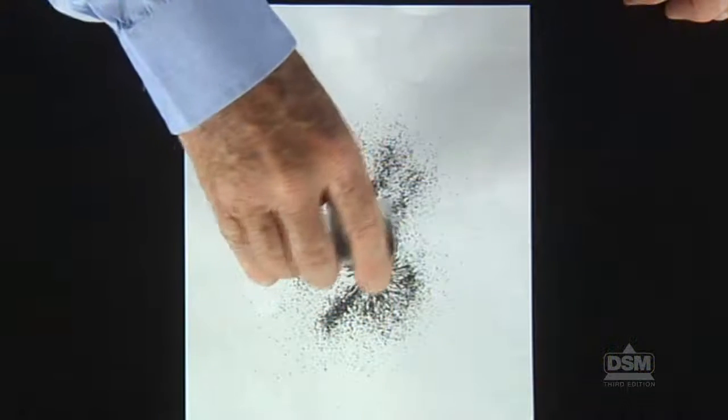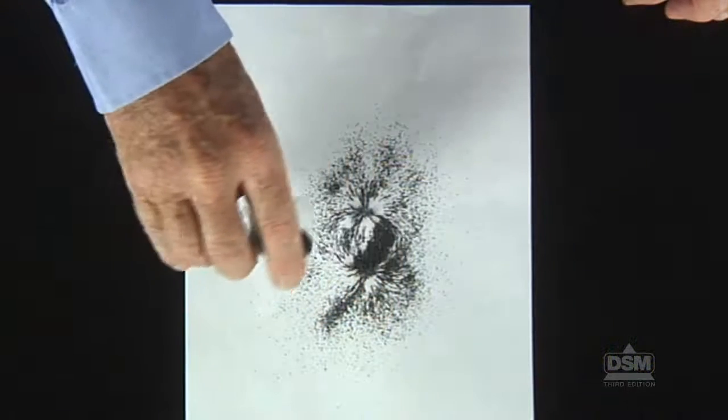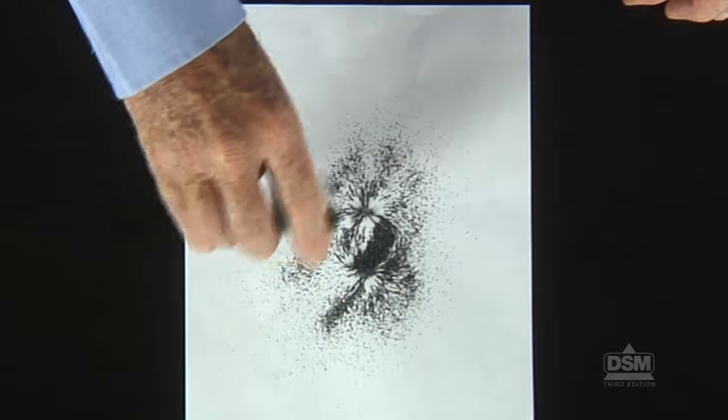As the tiny iron filings respond to the pull of the magnet, they line up around the magnet, outlining the magnetic field.